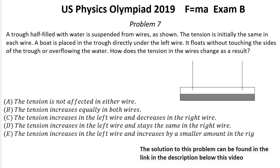Solution for problem number 7. The boat doesn't touch the wires or the trough. It only touches the water. The pressure at the bottom of the water remains the same everywhere, whether the boat is on top or not.